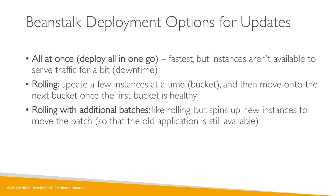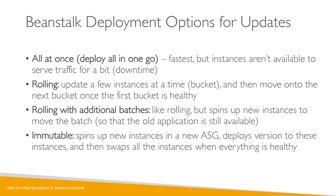There's a slight twist called 'Rolling with Additional Batches' — this is like rolling but you spin up new instances to move the batch, so your application is still available and always operating at full capacity. Finally, there are immutable deployments where you spin up new instances in a new ASG, deploy the version updates to these instances, and then when everything is ready, swap out the whole ASG when everything is healthy.